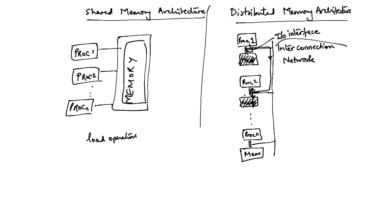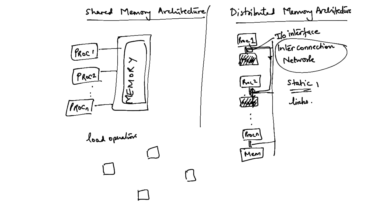How do you form these interconnection networks? Typically there are two kinds of interconnection networks: one is static. In static interconnection networks, they are essentially formed by links, and these links connect up different nodes together. For instance, in a simple 4-node system — where a node means a processor plus memory unit and its IO interface — I connect these up and put a link between every pair of nodes. This is one possible interconnection network, called a complete network.